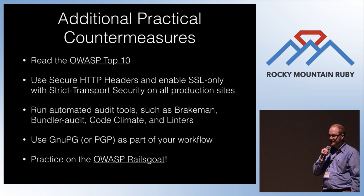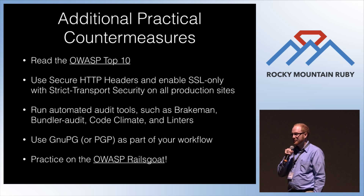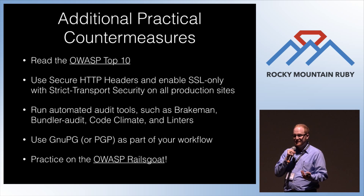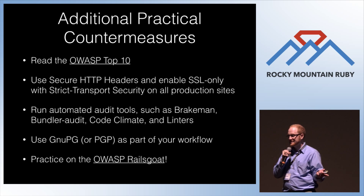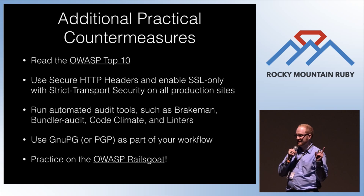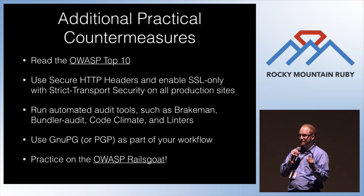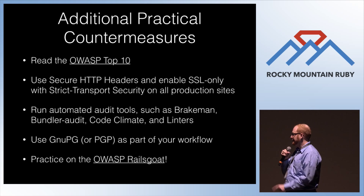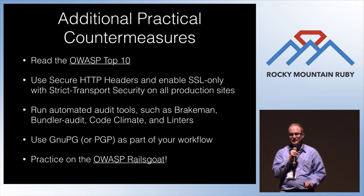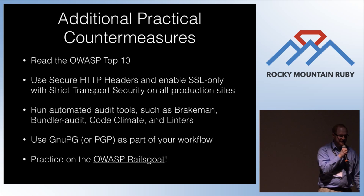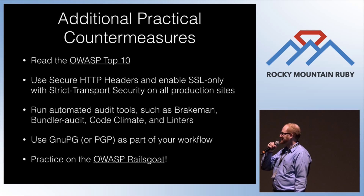Run automated tools such as Brakeman, Bundler Audit, Code Climate, and others. Use GNU PG or PGP as part of your process — at our company every developer gets a PGP key, and we actually encrypt certain customer data. Some customers even have PGP as we send information back and forth. This is particularly helpful when production database copies get passed around because a legacy application is very data-dependent. And practice on the OWASP Rails Goat project, which is an insecure Rails application — don't download it and say that's a great way to implement this feature; you should understand what's going on.